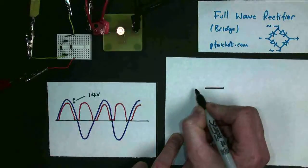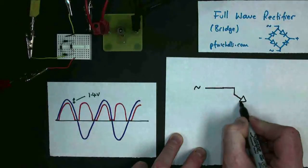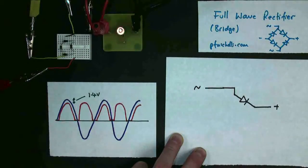You have your AC signal coming in, and it goes through a diode, and that goes out to positive. All well and good so far.